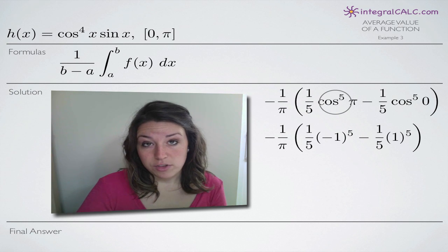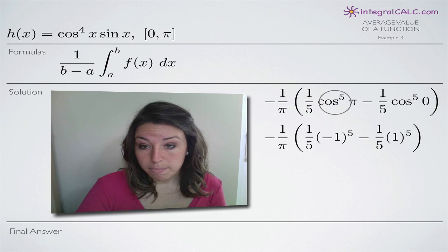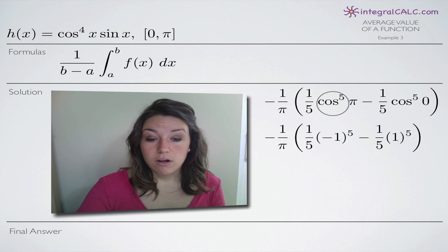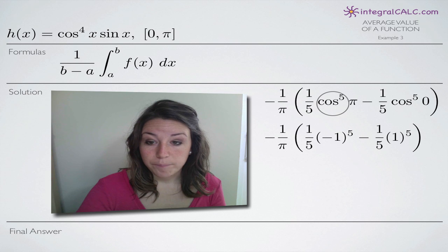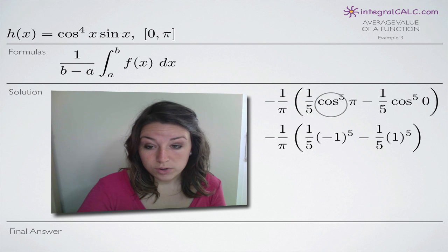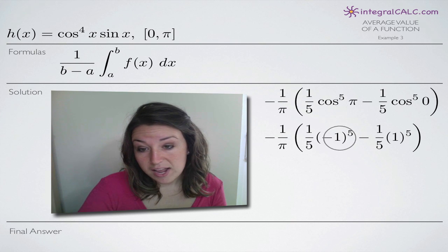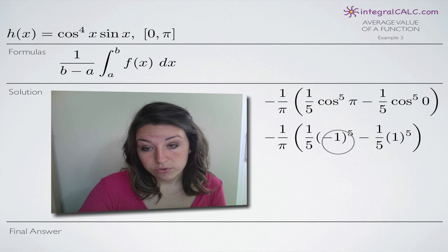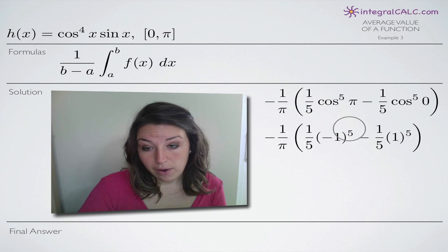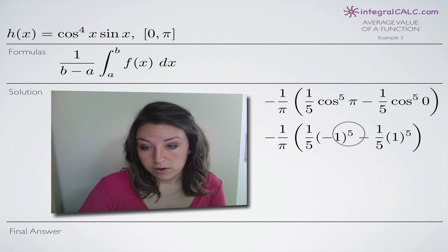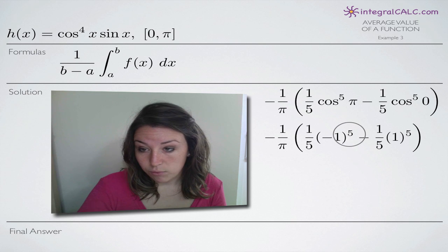Sine of an angle on the unit circle has us look at the y-coordinate. For cosine we look at the x-coordinate, and along the x-axis at angle pi, the x-coordinate is equal to negative one. So we plug in negative one for cosine of pi and keep the fifth power on the negative one.